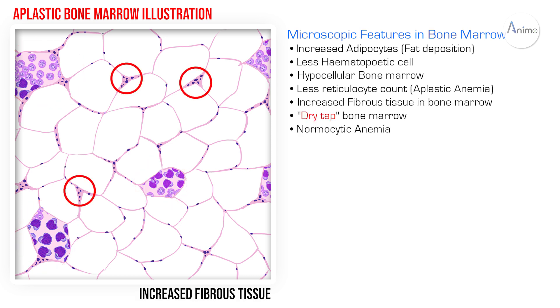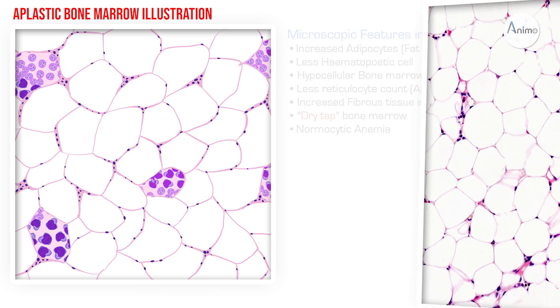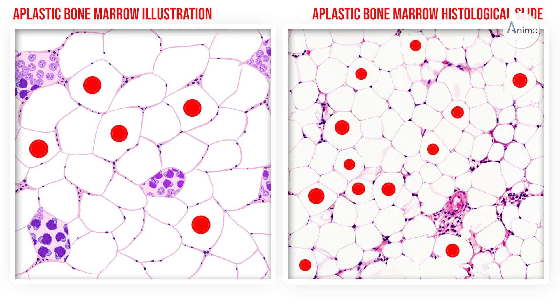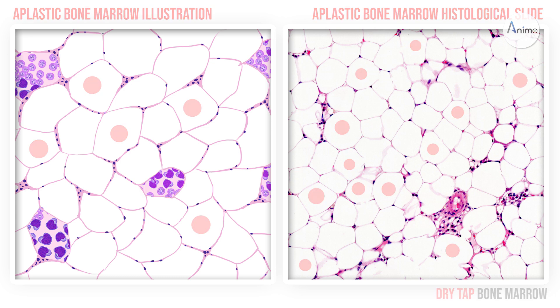There is also increased fibrous tissue in the bone marrow. Comparing it with the real histological slide of aplastic bone marrow, you can see there is an increased amount of adipocytes and fewer hematopoietic stem cells. This is called a 'dry tap' bone marrow because when we try to aspirate the bone marrow for examination, we get no or minimal sample — that's why it is called dry tap bone marrow.